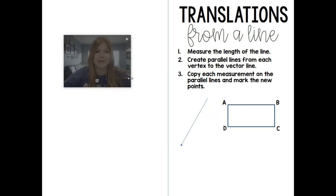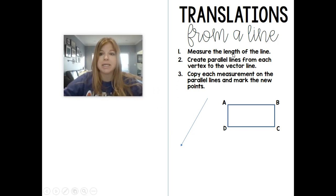I'm just gonna move my screen over here so I have some space. It says here measure the length of a line. So here we have quadrilateral ABCD and what I want to do is I want to translate it along this line, but what this line is telling you is a couple of things.